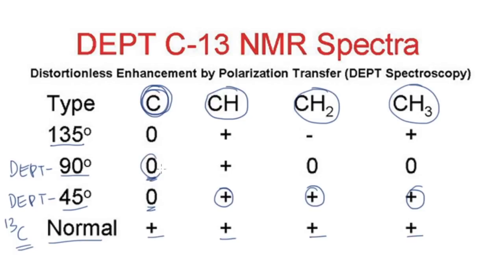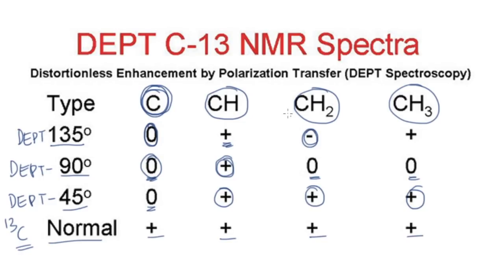In DEPT 90, you won't get any peak for quaternary carbon, and you get a positive peak only for the CH group. CH2 and CH3 won't give any peak in DEPT 90. Now for DEPT 135 — the most important one — it also gives no peak for quaternary carbon, gives a positive peak for CH, a negative peak for CH2, and a positive peak for CH3. So remember: DEPT 135 gives negative peaks for CH2, and positive peaks for CH and CH3.